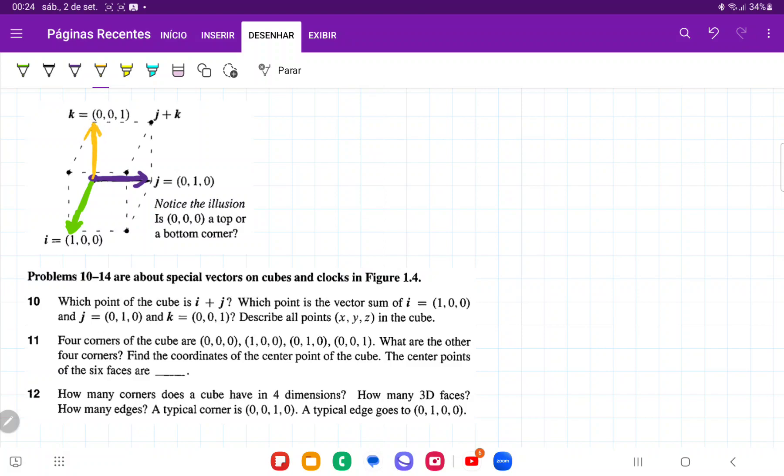So if you think of the point i plus j, well, we're not going to have any vertical component. So we're going to be stuck here in the lower plane, but we're going to have maximum lateral height and then maximum forward height. So that is going to be this point here.